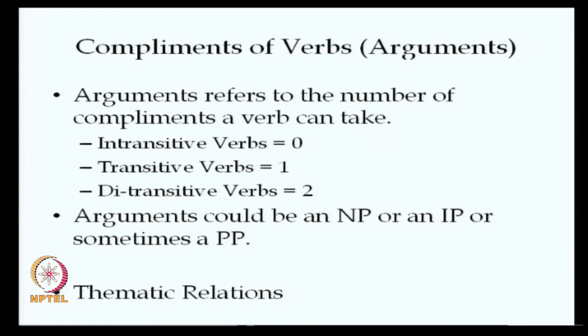Intransitive verbs will have no noun phrase in the predicate — no NP inside the VP. Transitive verbs will have one NP inside the VP, and ditransitive verbs will have two NPs inside the VP. That is the meaning of a verb and its arguments.